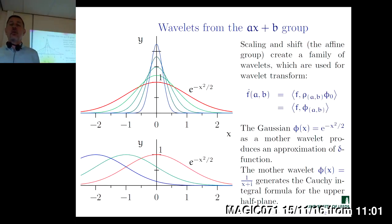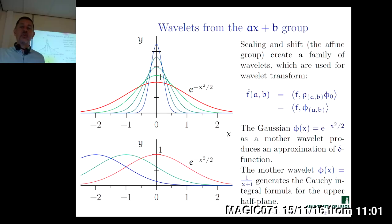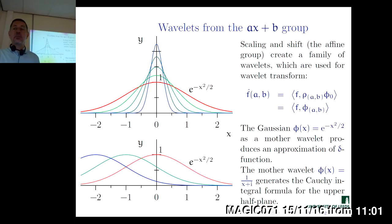Although classically, wavelets denote something much more restricted. The classical theory of wavelets is related to the action of the so-called AX+B group — the group of affine transformations of the real line — which consists of scaling, where A multiplies X producing scaling of the real line, and B produces a shift. So composition of shift and scaling is the group of affine transformations of the real line.